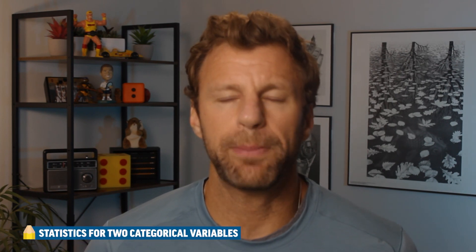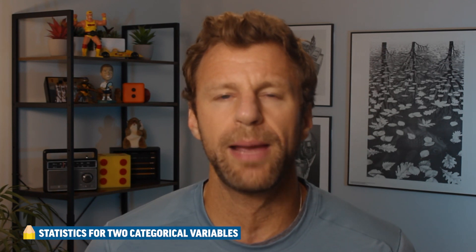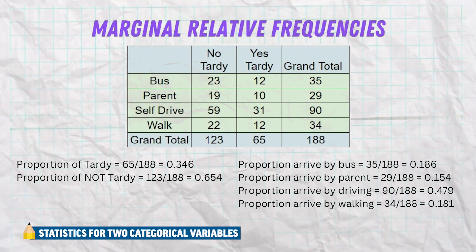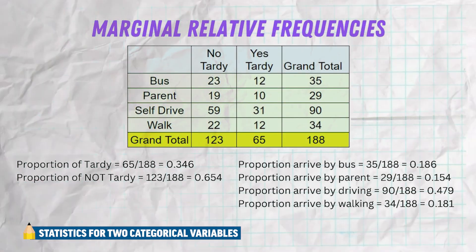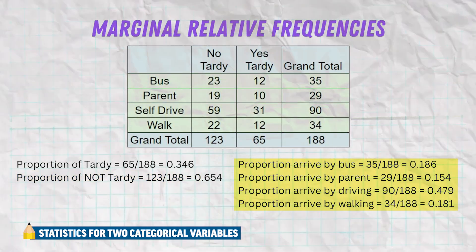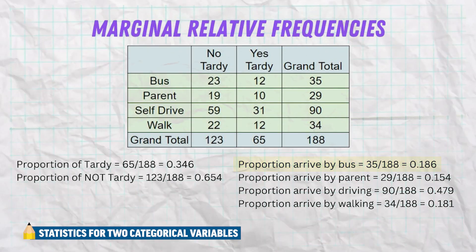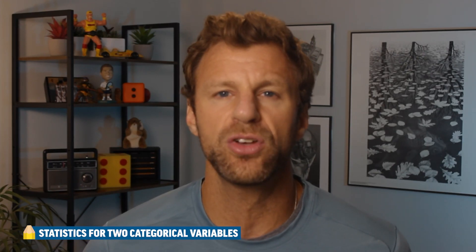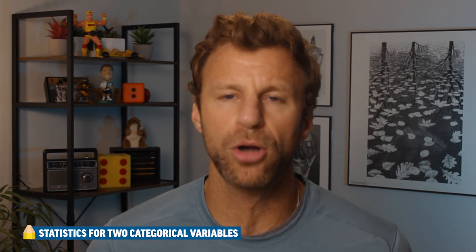From a table like this, we can calculate some sample statistics — called sample statistics because they come from a sample. Statistics is the word we use for any information taken from a sample. We have several different types of statistics we can gather from a two-way table for categorical variables. First, we have marginal relative frequencies, where we look at the values in the totals. That's why it's called marginal — because the totals are in the margins of the table. We can look at the proportion of all kids that were tardy, or not tardy, or the proportions for each mode of transportation, calculated by dividing by the grand total.